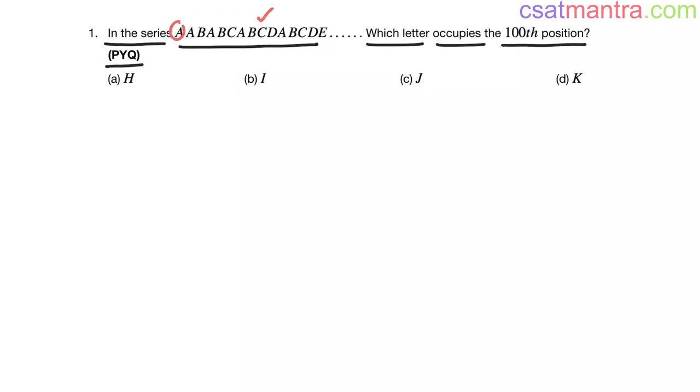See, A, then A B, then A B C, then A B C D, then A B C D E, like this. So we have 1, 2, 3, 4, 5 letters in each set.